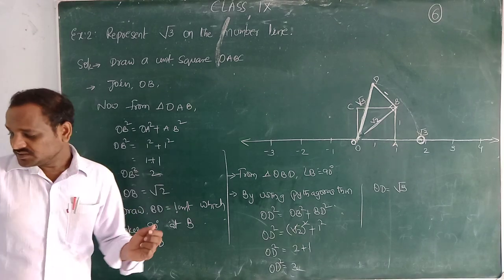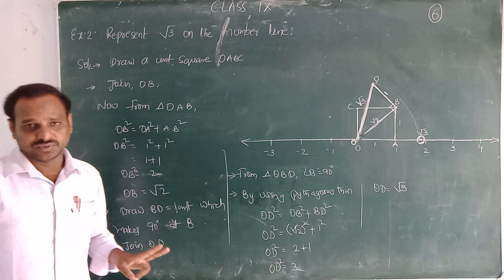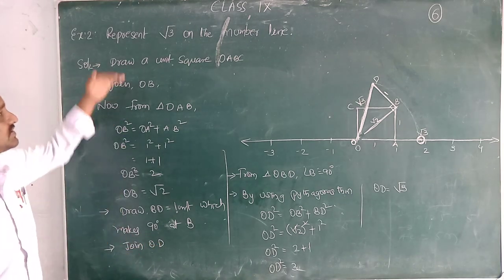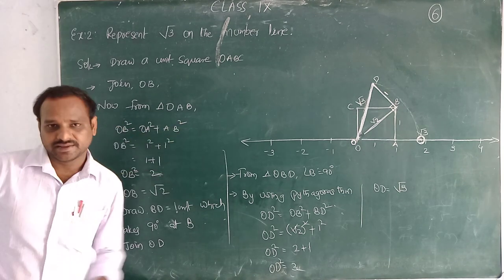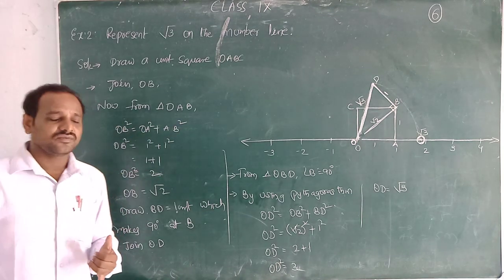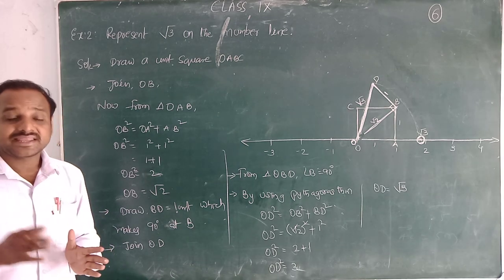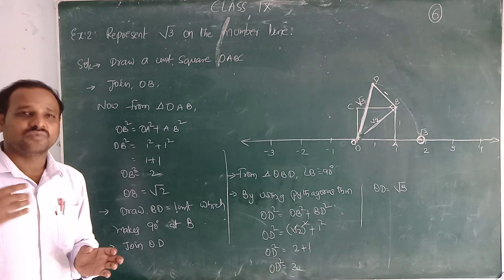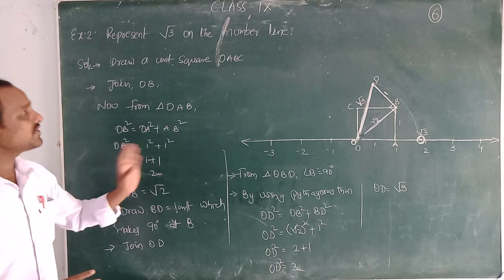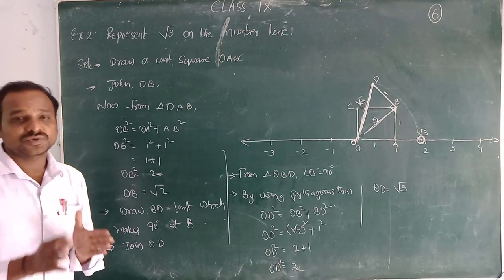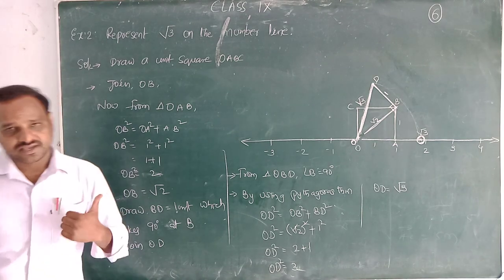Today we completed Type 2 in irrational numbers — the representation of irrational numbers on the number line. Next class we are going to discuss finding one, two, or more rational numbers between two irrational numbers. Thank you.